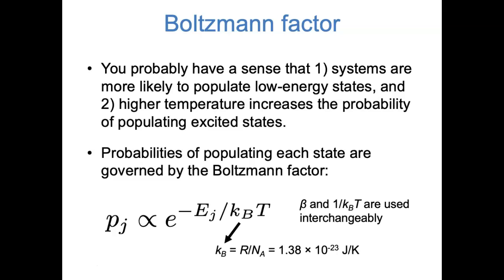If you look at this whole expression, you'll notice that as the energy gets higher, the exponent becomes a larger negative number, and so the probability of occupying a state gets smaller. That makes sense — lower energy states are more likely to be occupied than higher energy states. Also notice that as the energy gets higher, probability doesn't just get lower; it gets lower really quickly. It goes as an exponential.